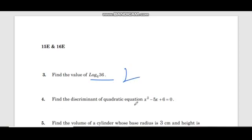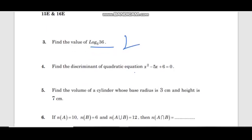Find the discriminant of a quadratic equation x square minus 6x plus 6 equals 0. The discriminant is b square minus 4ac.